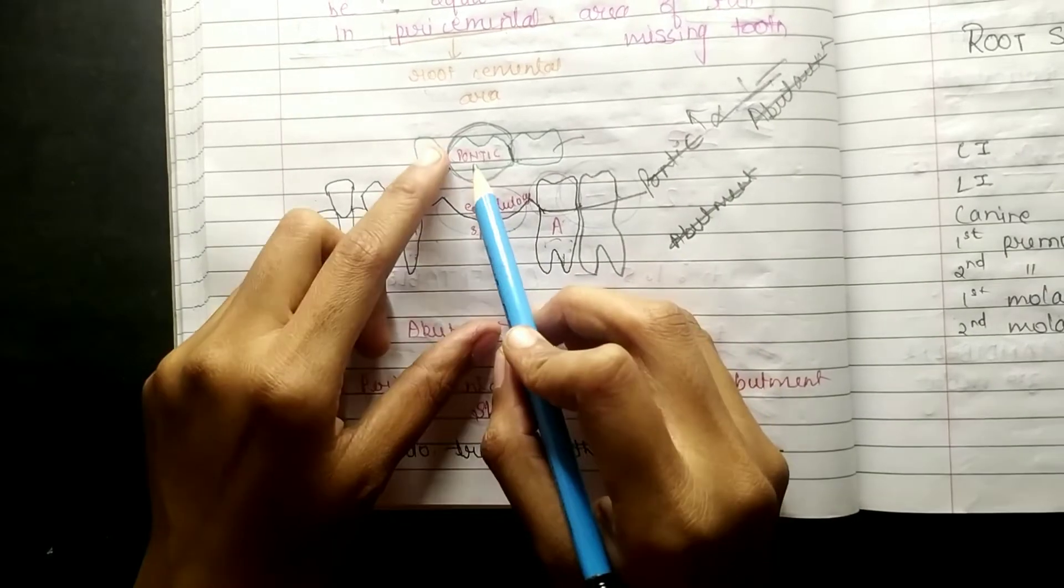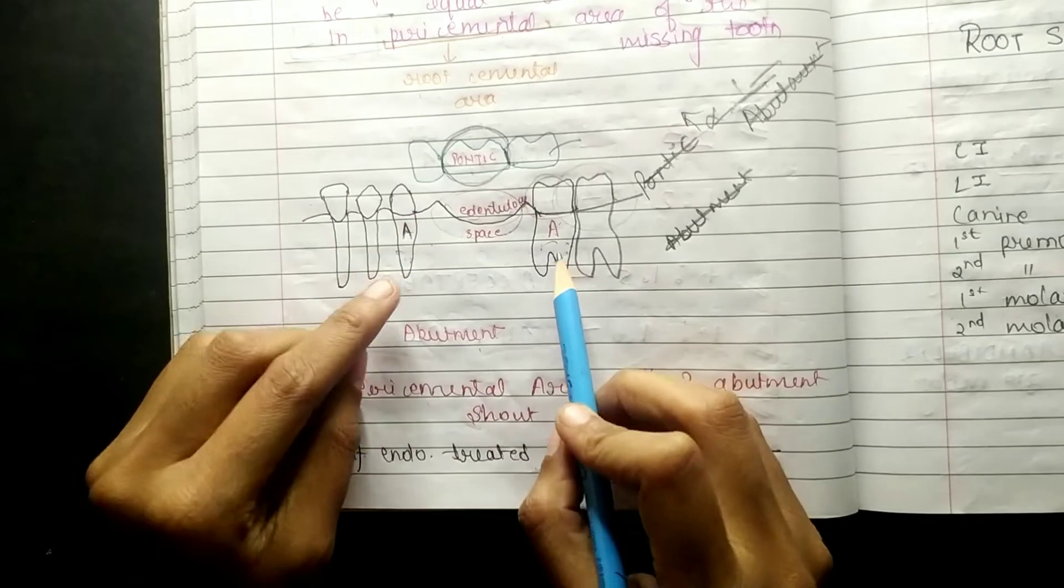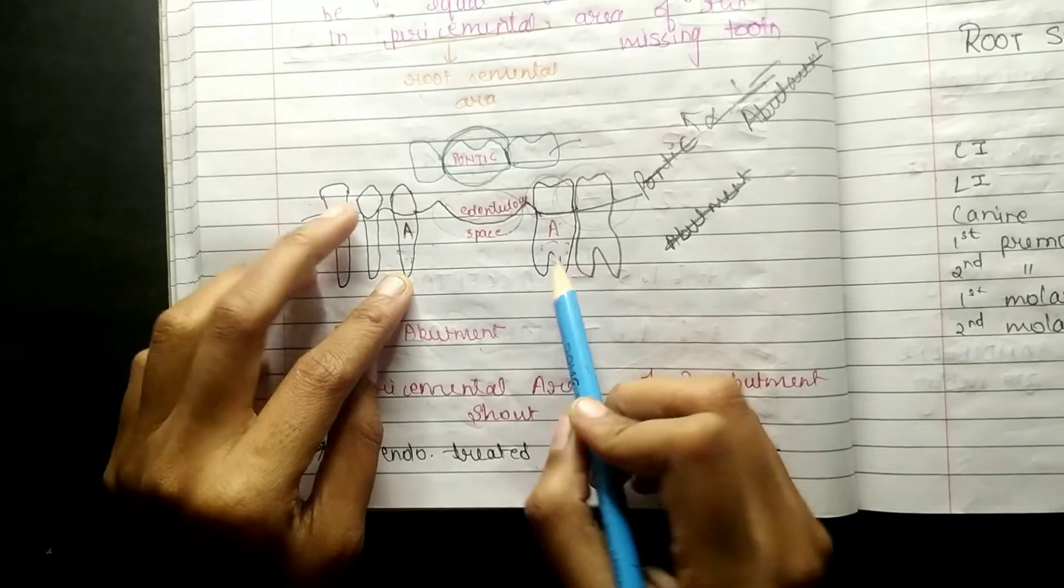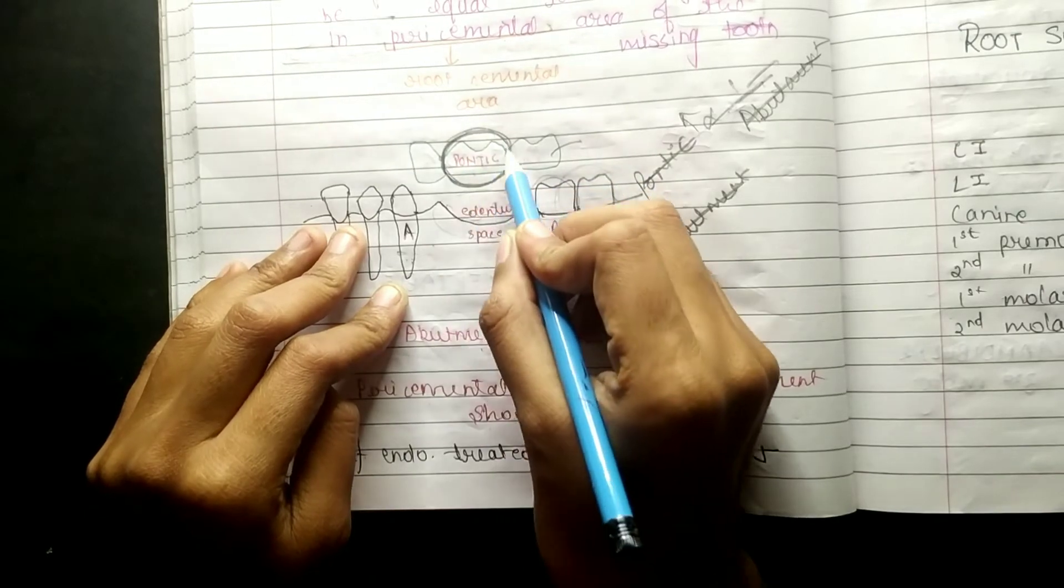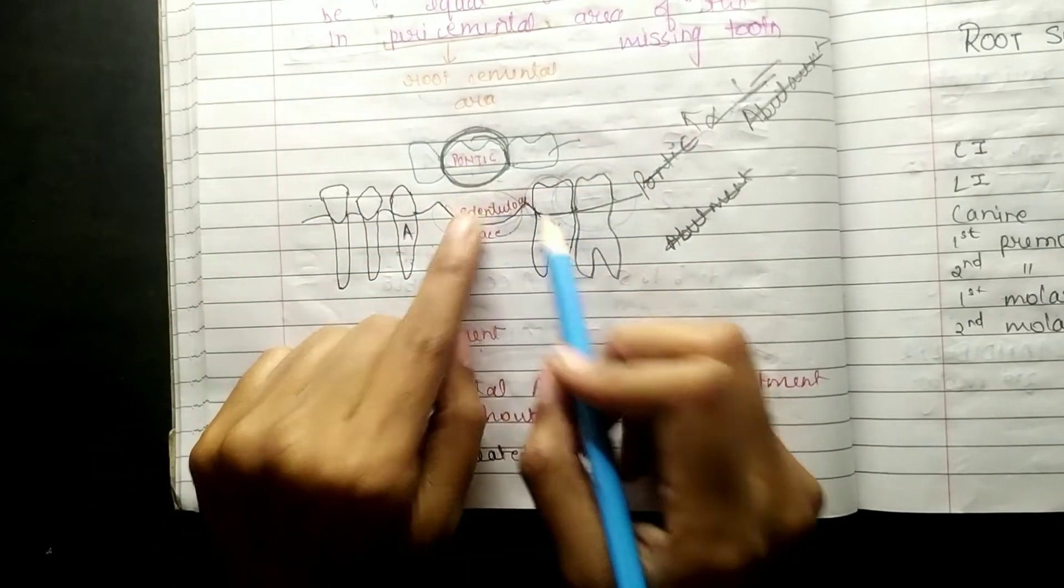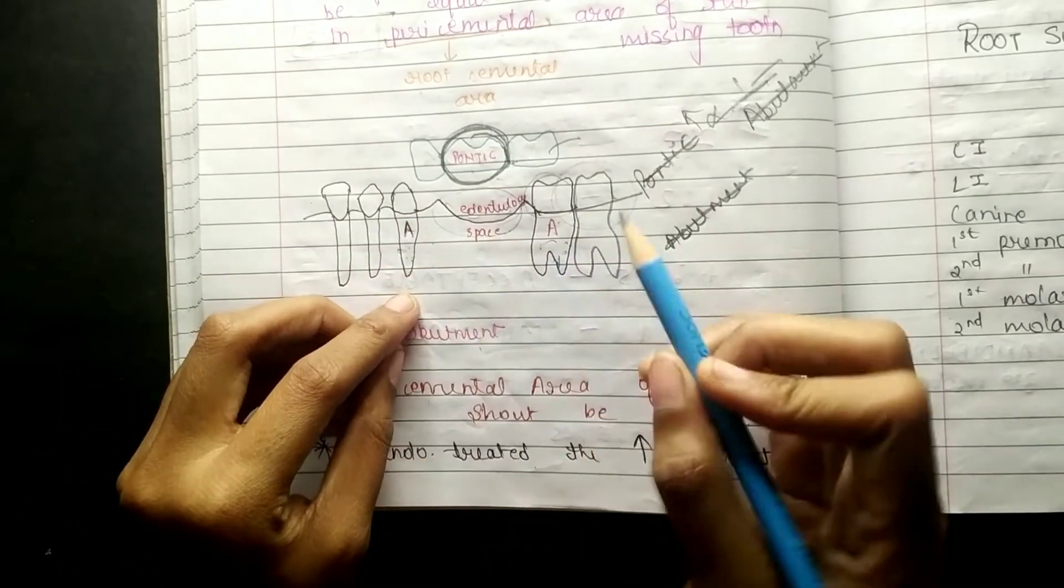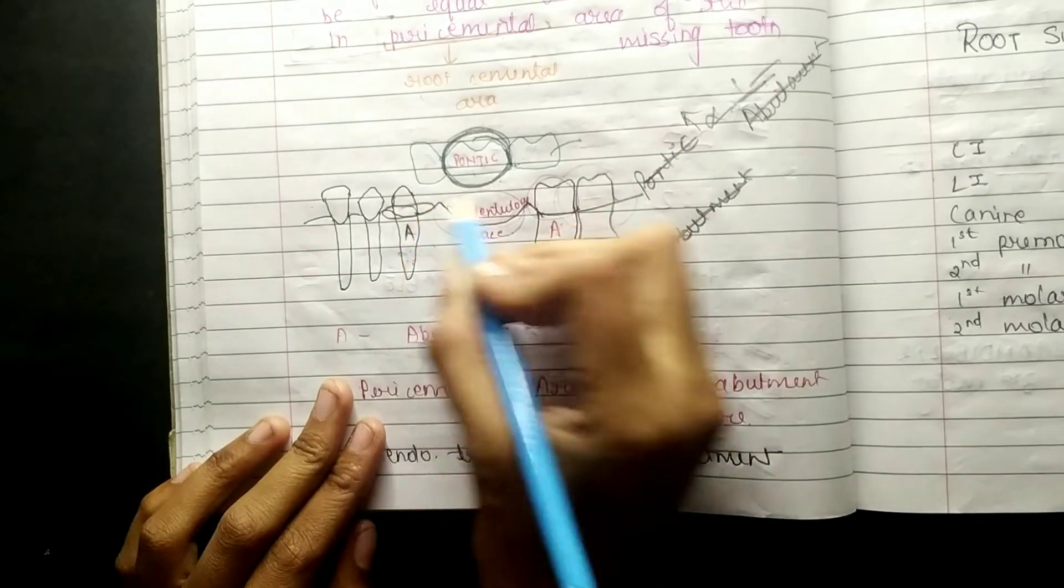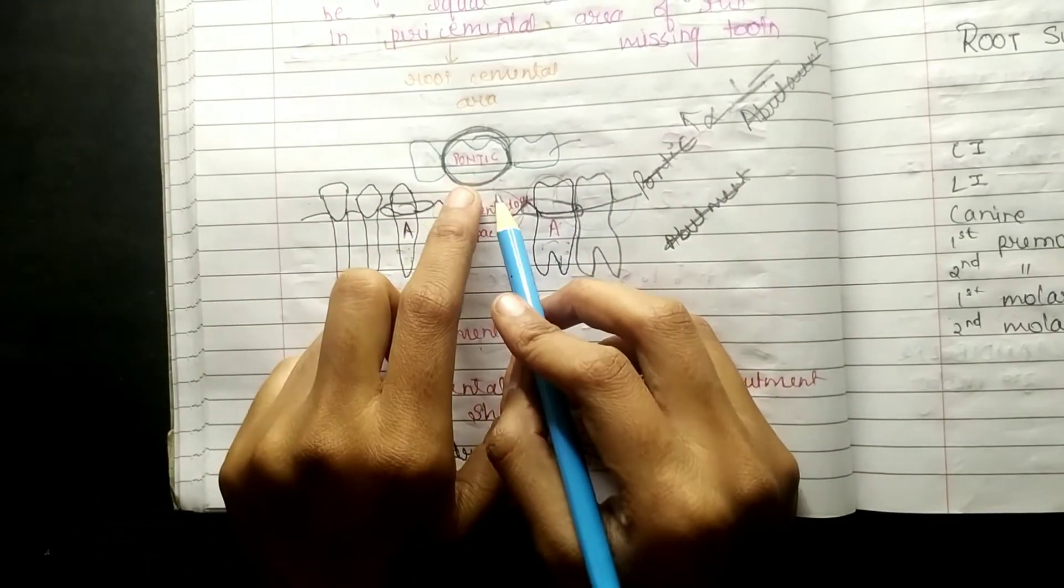The pericemental area of the abutments should equal or be greater than the pericemental area of the pontic. This law is about support of the abutment.